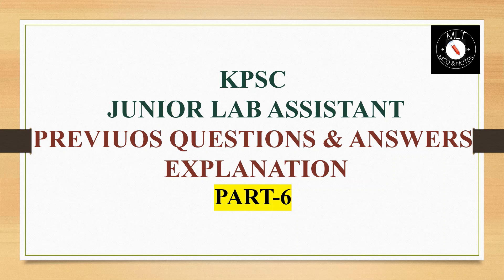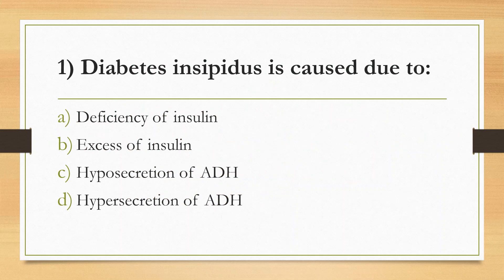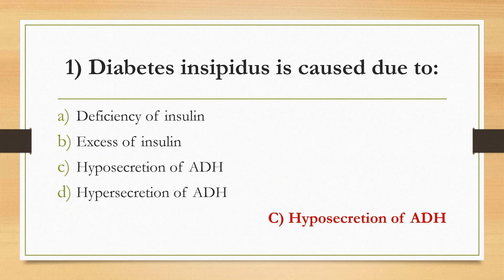First Question: Diabetes insipidus is caused due to — Option A: Deficiency of Insulin, Option B: Excess of Insulin, Option C: Hyposecretion of ADH, Option D: Hypersecretion of ADH. Answer is Option C: Hyposecretion of ADH. In diabetes insipidus, there is excessive and frequent urination.